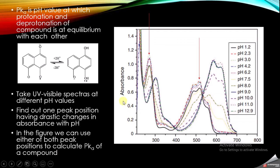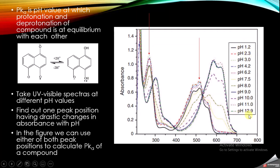The first step is to take the UV-visible spectra of the compound at different pH values. You will need to make your solution at different pH values ranging from very low to higher pH. As you can see in this figure, the UV-visible spectra of the compound are plotted at different pH values ranging from pH 1.2 to pH 12.9.